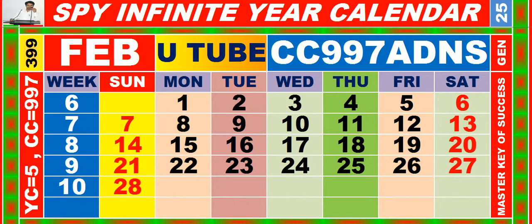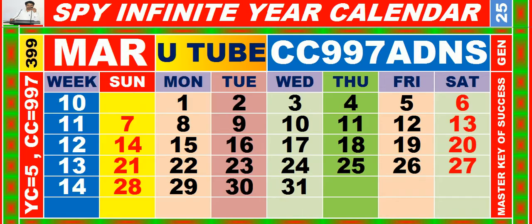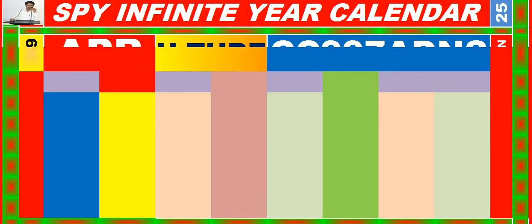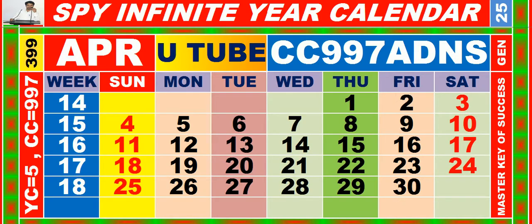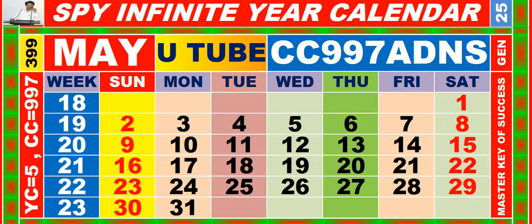Calendar for the month of February having calendar code equal to 997. Calendar for the month of March having calendar code equal to 997. Calendar for the month of April having calendar code equal to 997. Calendar for the month of May having calendar code equal to 997.